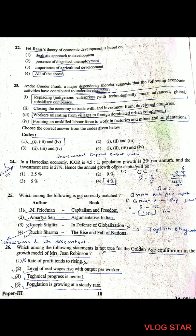Question 26: Which statements are NOT true about the golden age equilibrium in Joan Robinson's growth model? The first statement is not correct — it says the rate of profit tends to be rising, which is incorrect. The other three correct features of Joan Robinson's golden age equilibrium are: level of real wages rises with output per worker; technical progress is neutral; and population is growing at a steady rate.